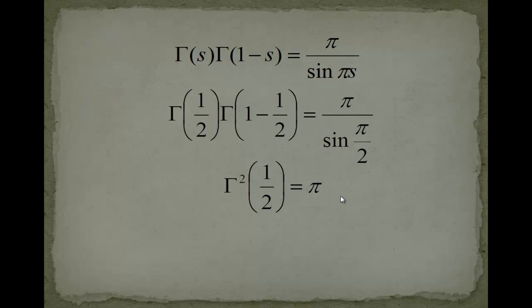Now this is an easy equation. We have gamma of 1 half squared is equal to pi. What do we do? We just take the square root. Now we know that the value of the gamma function for s equals 1 half is equal to square root of pi.